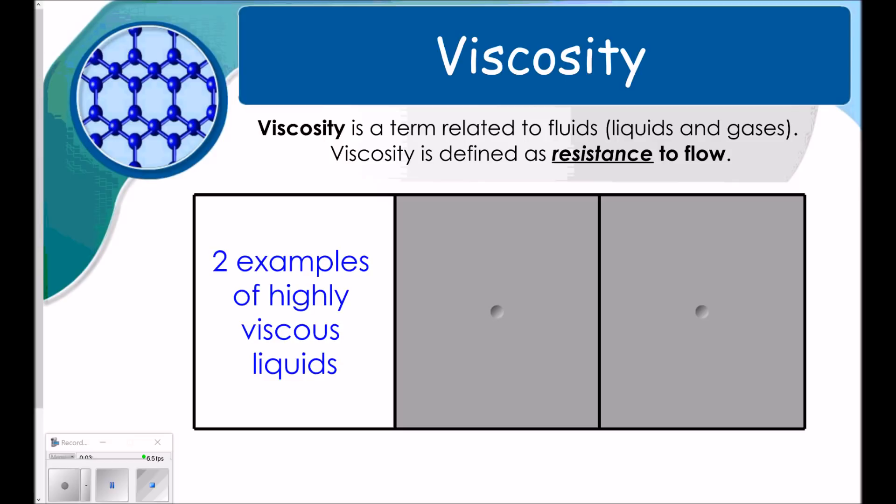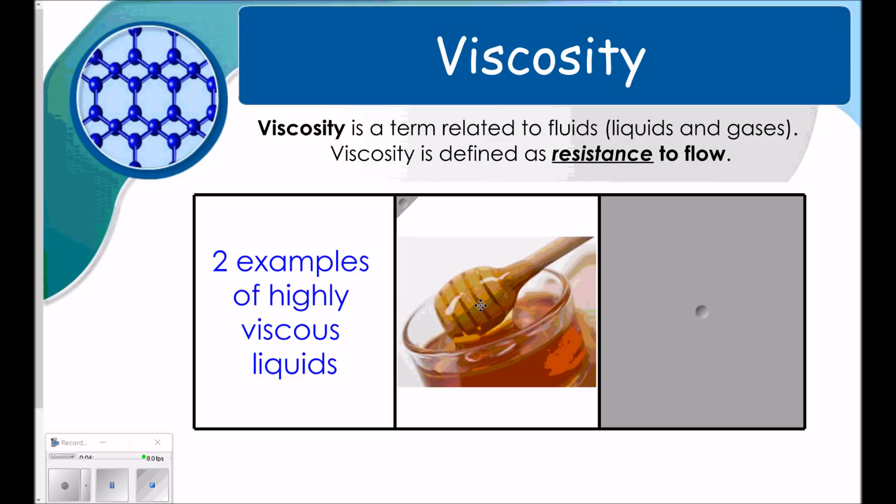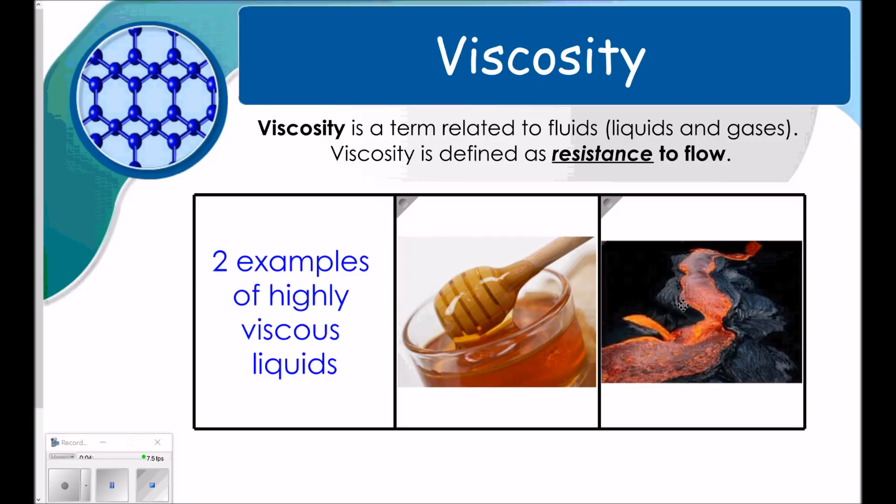In this unit, like the last one, there's a couple of vocabulary words we need you to be comfortable with. Viscosity is one of them. Viscosity is a term related to fluids, only liquids and gases, so not solids. Viscosity is defined as resistance to flow. So I have two examples of highly viscous liquids. Honey and lava. They're very slow moving and resistant to flow.